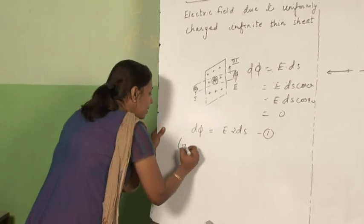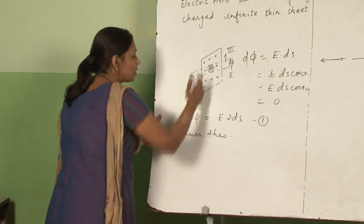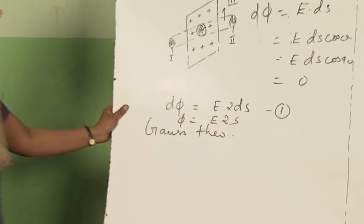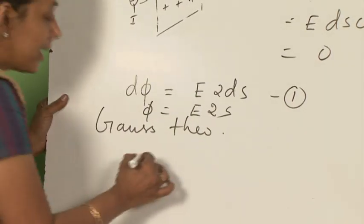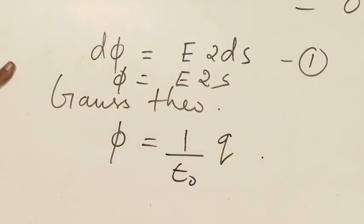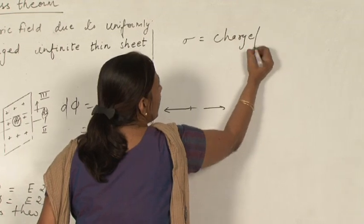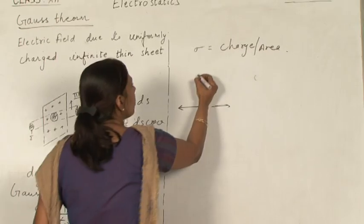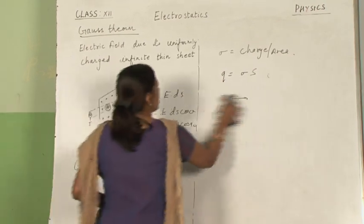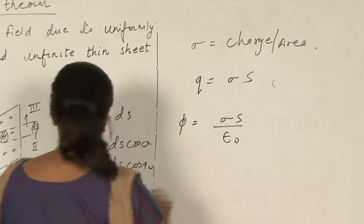By using Gauss theorem, the total flux here will be E·2S if the total area is S. From Gauss theorem, total flux equals (1/ε₀) times the total charge enclosed. If σ is the charge per unit area, then Q = σ·S. So by Gauss theorem, flux = σS/ε₀. This is equation 2.